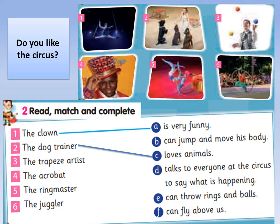The trapeze artist, it's letter F, can fly above us. Number four: The acrobat, it's letter B, can jump and move his body. The ringmaster, number five, we will match it with letter number two, talks to everyone at the circus to say what is happening. The last one, number six: The juggler can throw rings and balls. Very good.